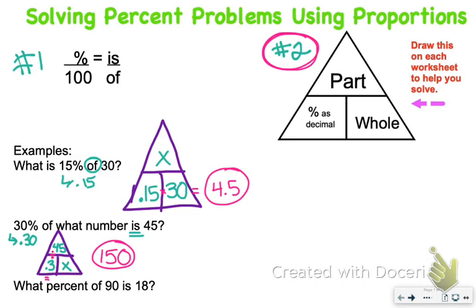In our last scenario where we are not given the percent, we're given the of and the is, so start by drawing our little triangle. If we see of 90, reminder that of is the whole, so bottom right. Is is the part, so that goes in the top.